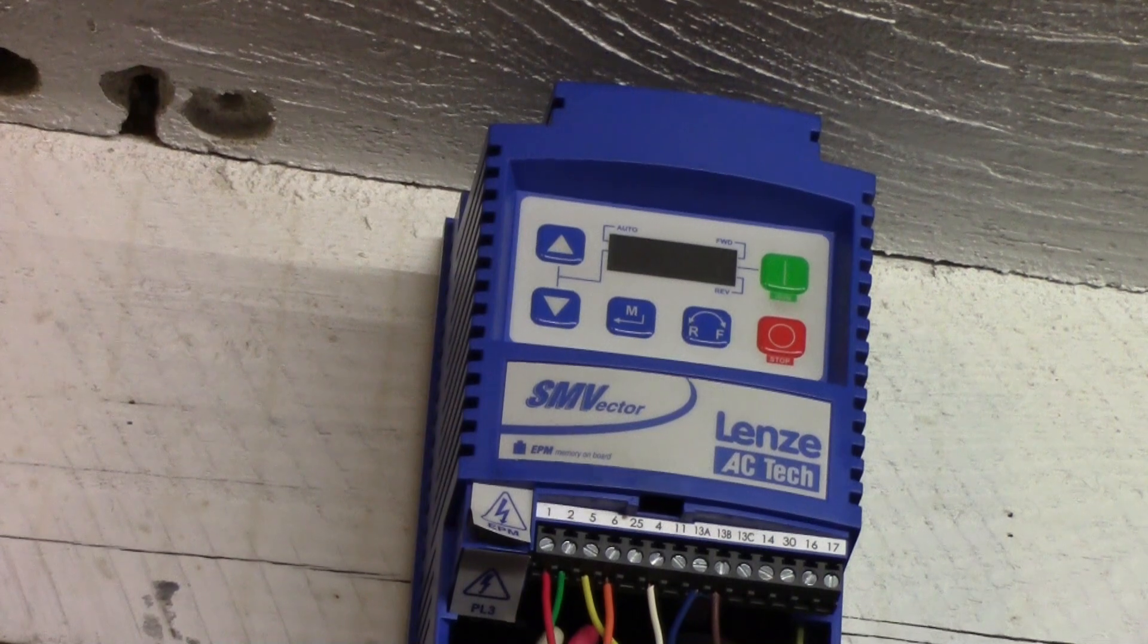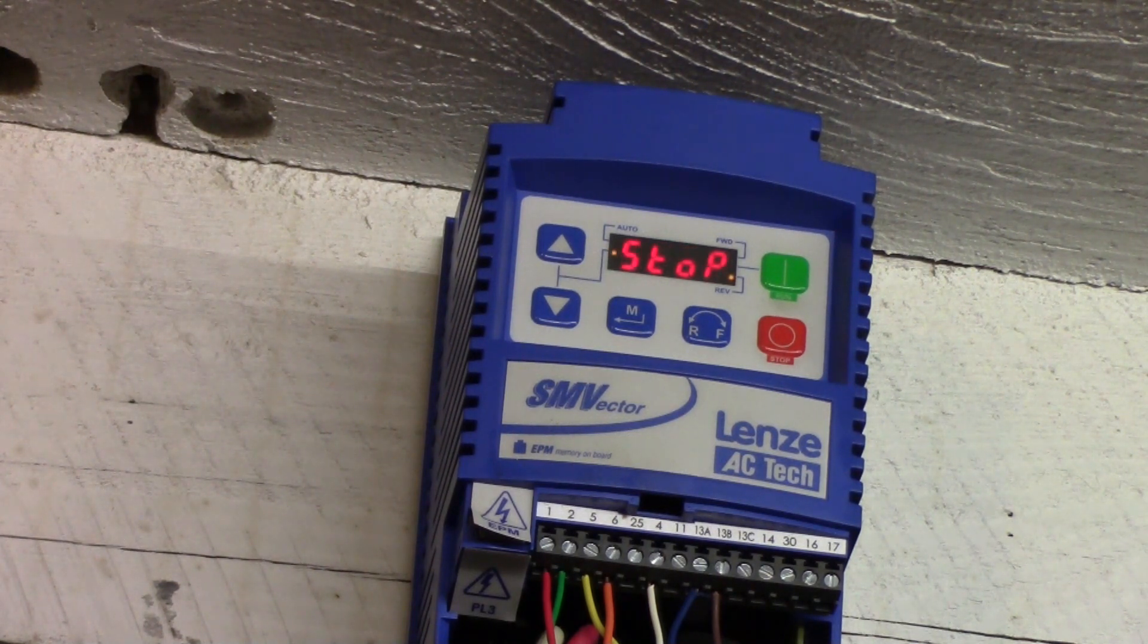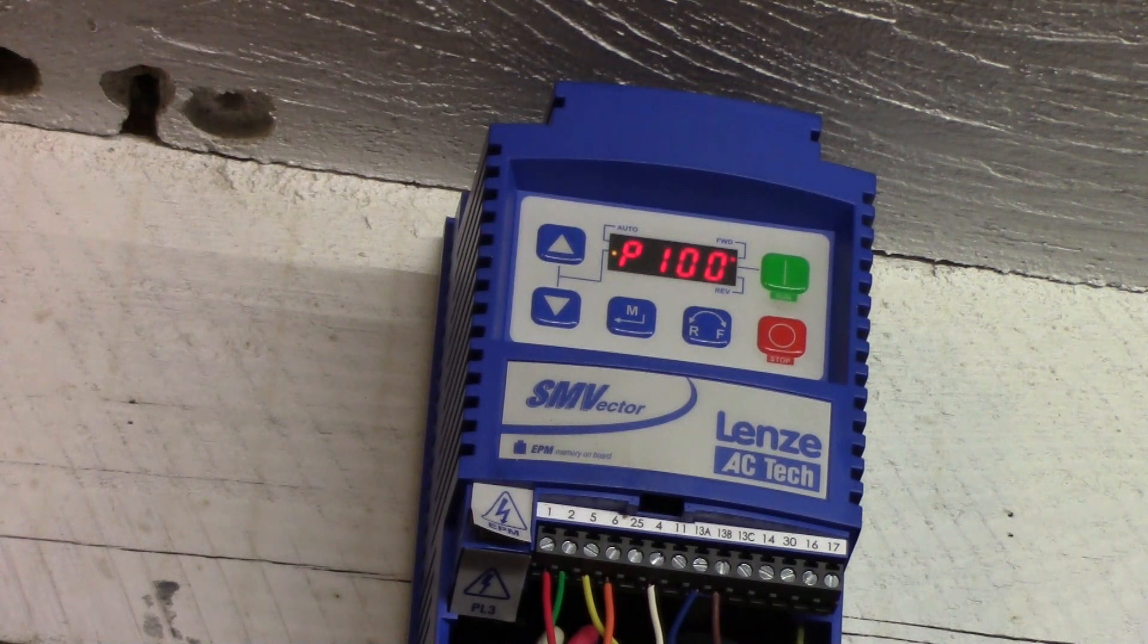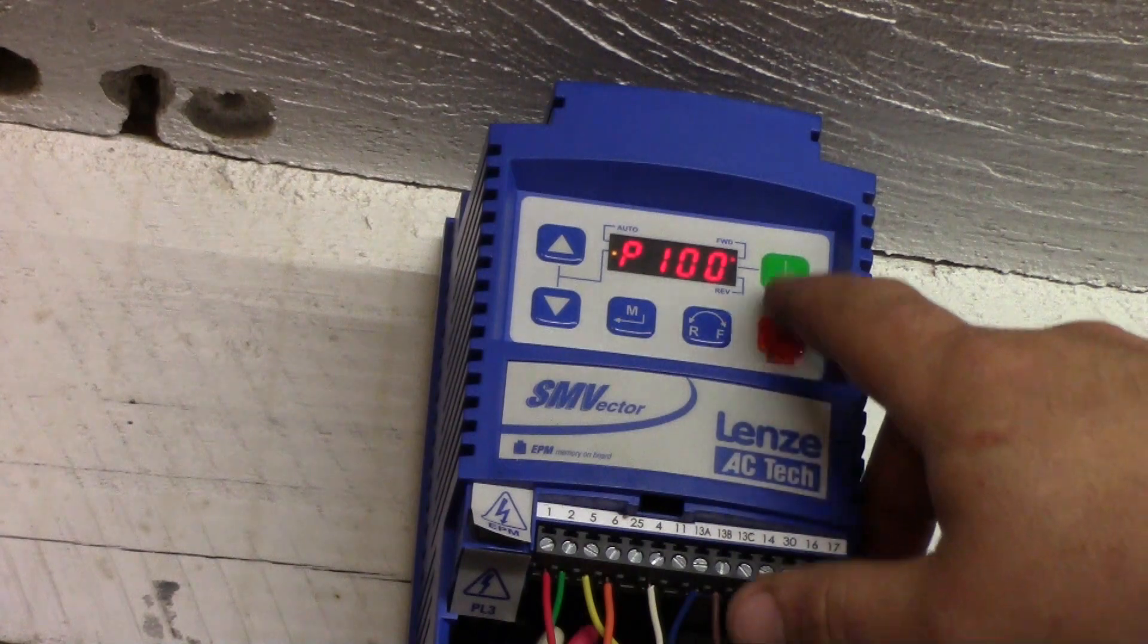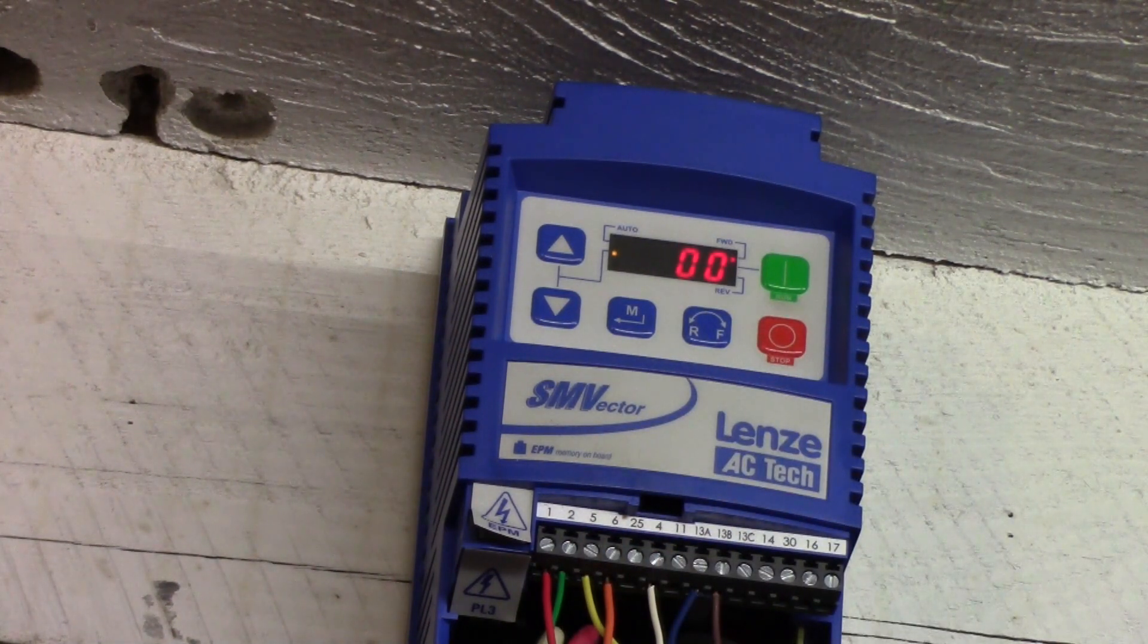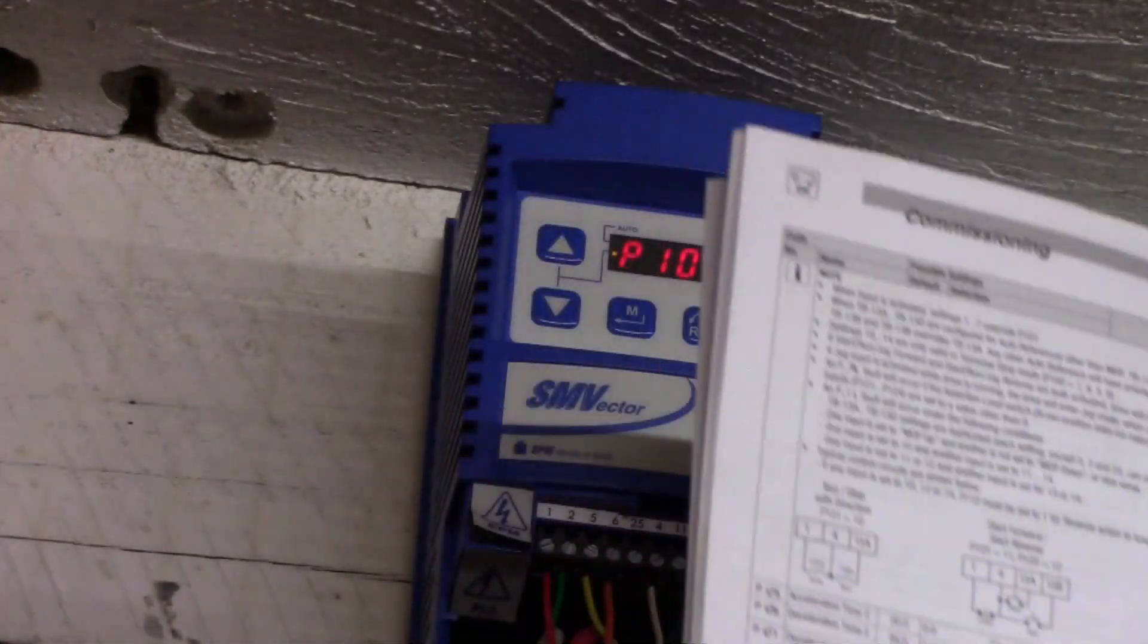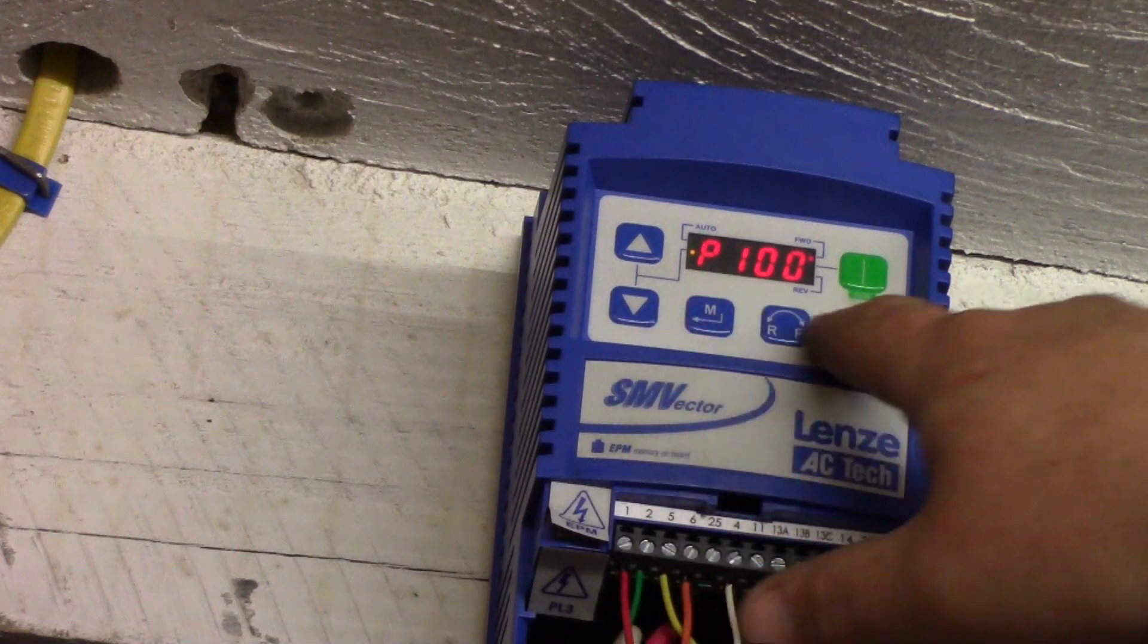I'm going to turn it on. We're going to go into the mode P100. That's going to select our source for our controls. P100, and we're going to select that. It's set to zero, which is the local keypad, which is this. And we want our terminal strip, so terminal strip is one.